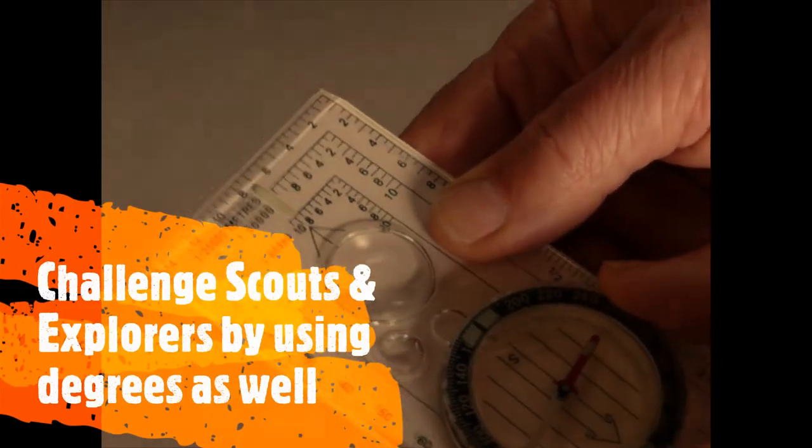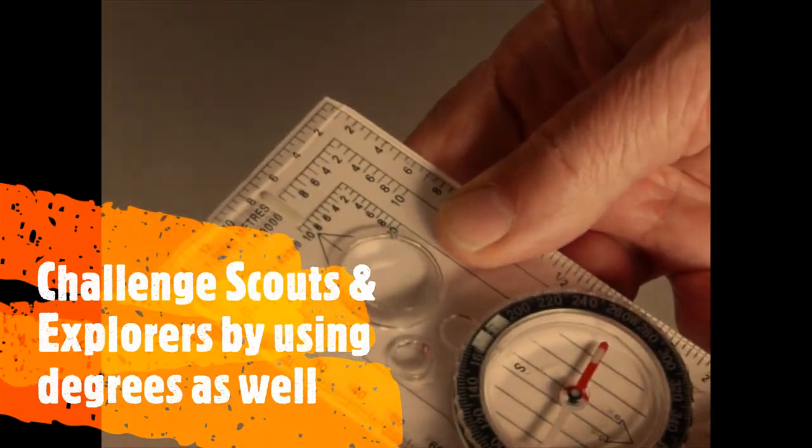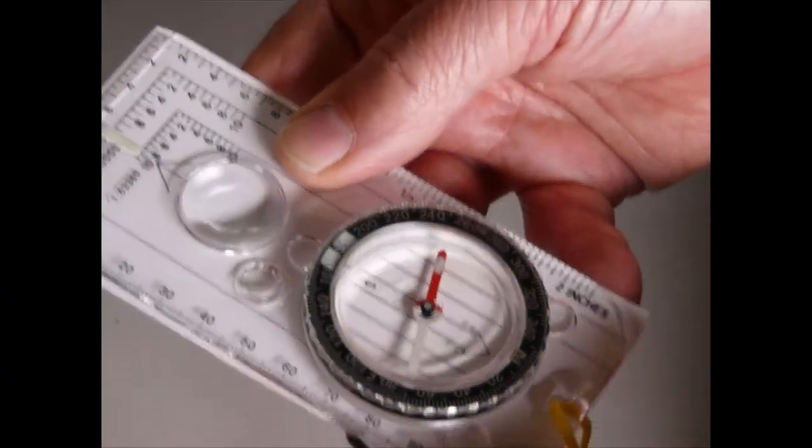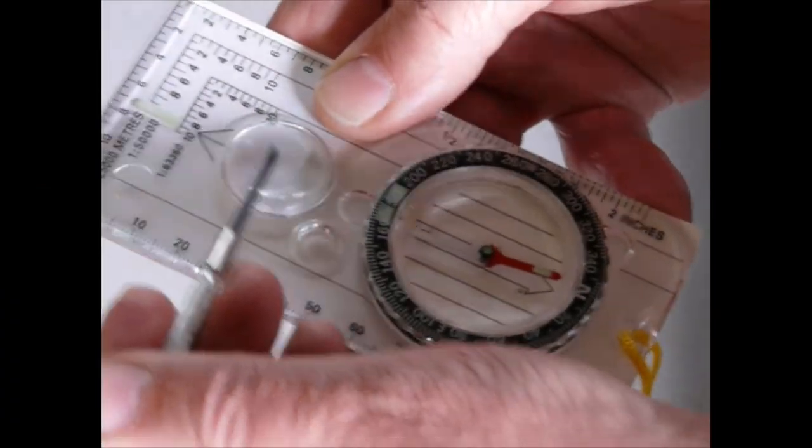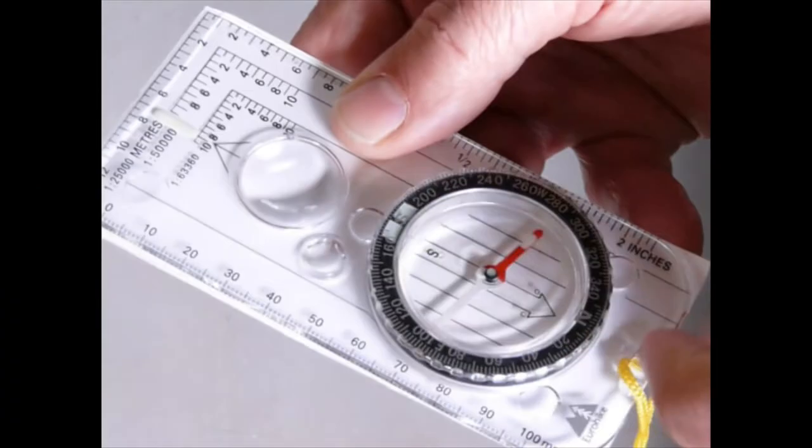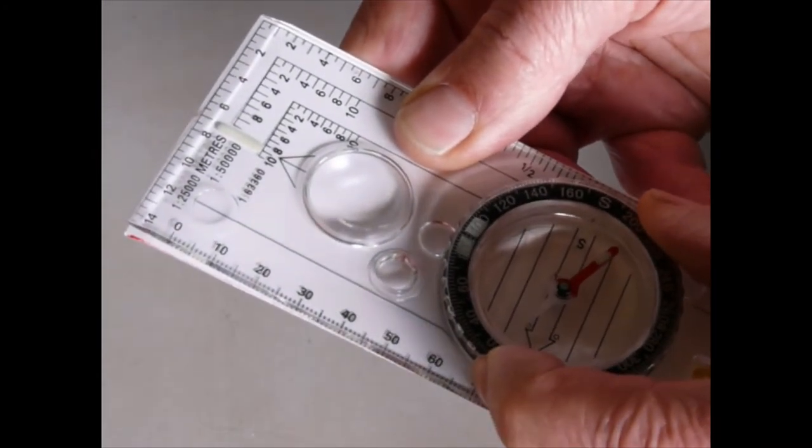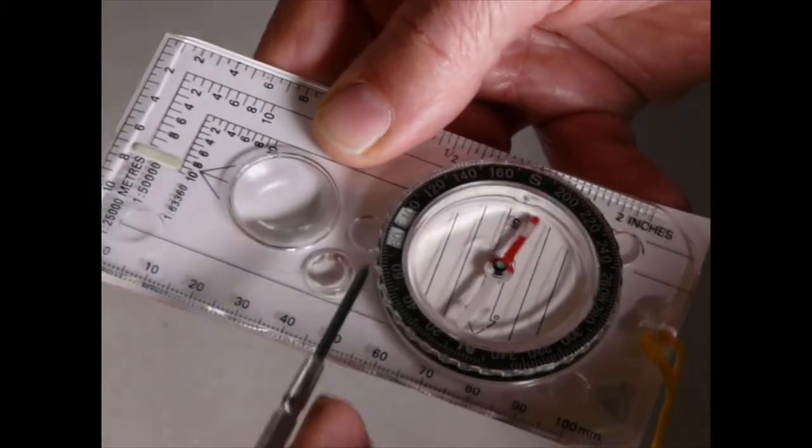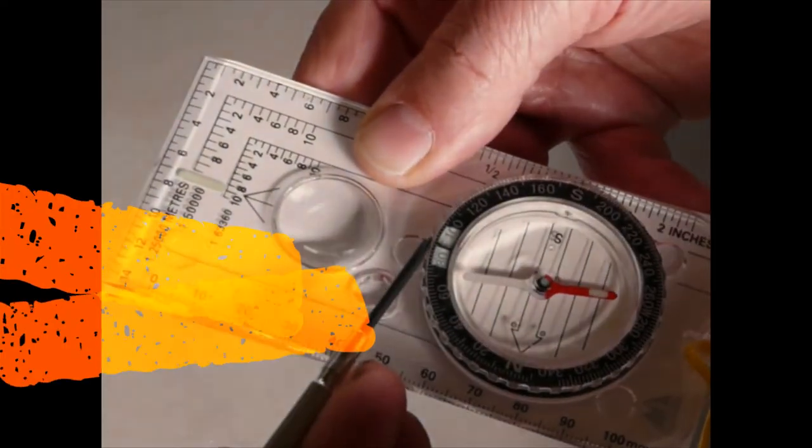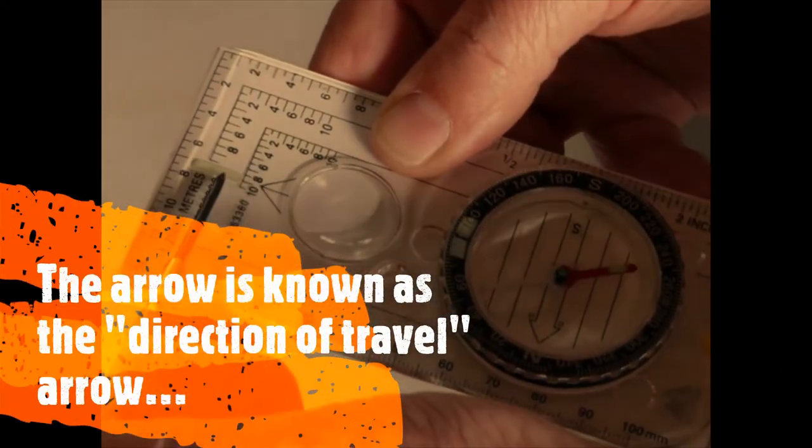I'm going to turn this disc now so that this E at the side ends up right opposite the arrow on the plastic. So I'm going to move it around until E sits straight opposite the arrow on the plastic. Here's E, and here's the arrow on the plastic.